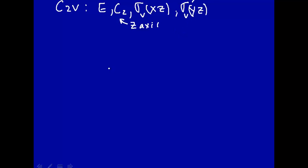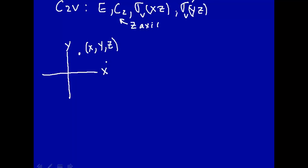Now that we have some geometry set up, let's see what we can do to represent these symmetry operators as matrices. Let's draw the coordinate system: the Z axis is coming out towards you, the X axis and Y axis are in the plane of the screen. Let's take some point and give it coordinates X, Y, and Z. Now let's do a C2 rotation. This rotates around Z, and the point is now down here.